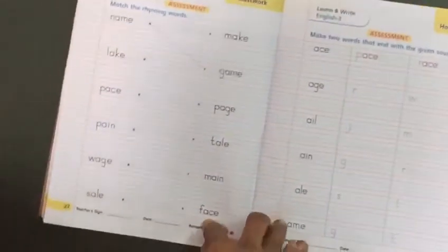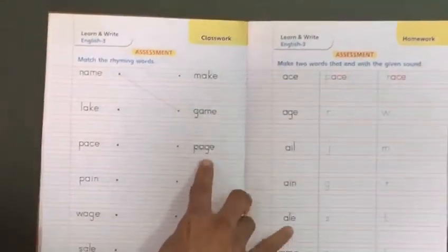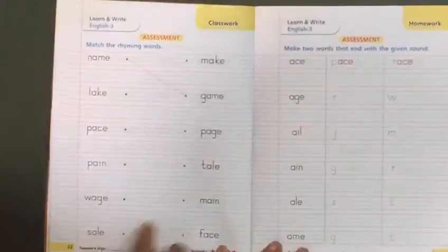Page number 22. Match the rhyming words. Name, game, L-A-K-E make, pace, face, pain, main, wage, page, sale, tail.